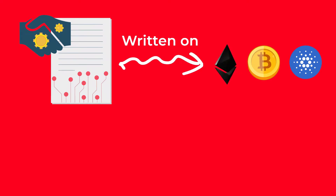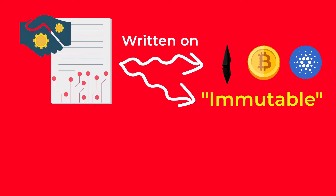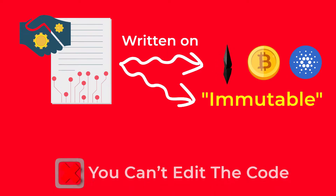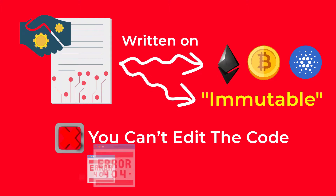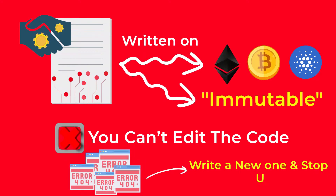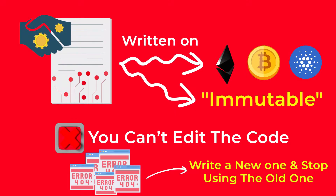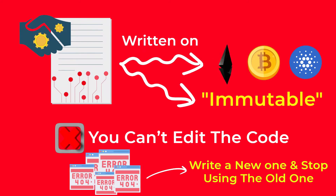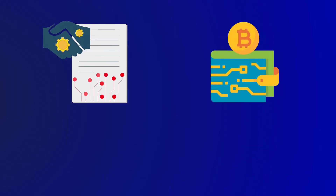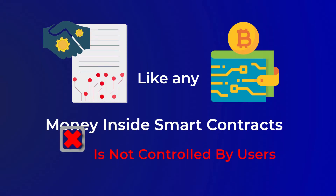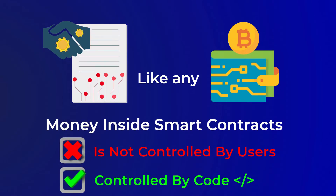A very important feature of smart contracts is that they are immutable, which means that once a smart contract is written and deployed on the blockchain, you can't edit it again. Even if it has errors or bugs, what you can do is write a new one and stop using the old contract. This is actually a good thing to prevent modification of the code by scammers. You should also know that smart contracts can store, receive, and send cryptocurrencies, just like any crypto wallet, but this money is controlled by the programmed code, not by any user.